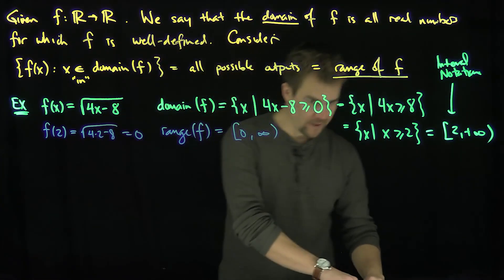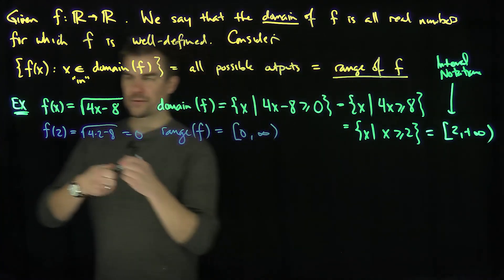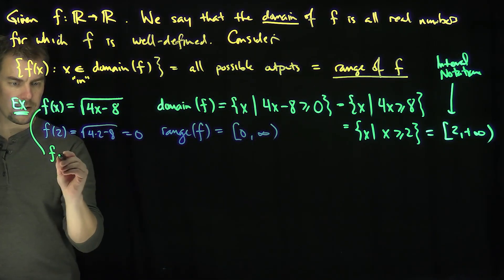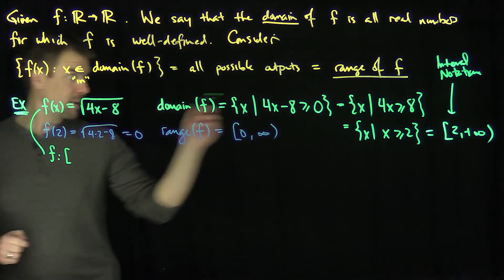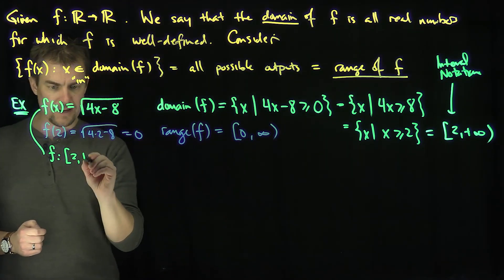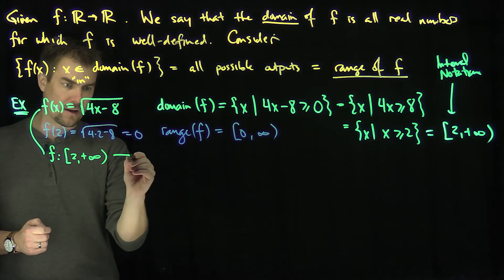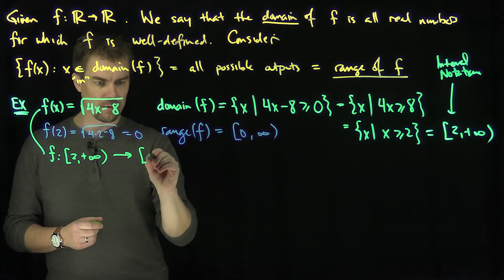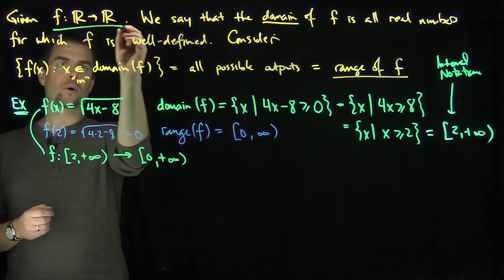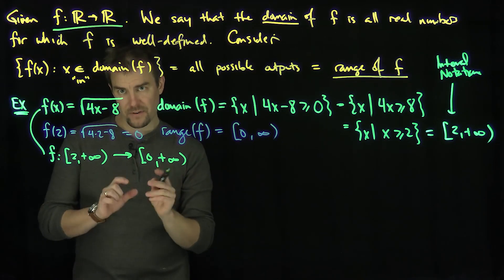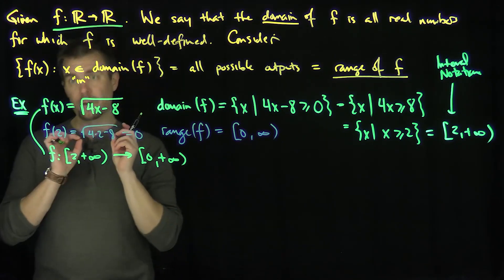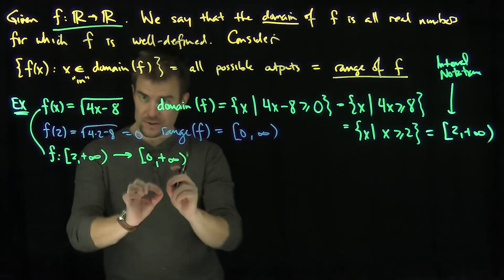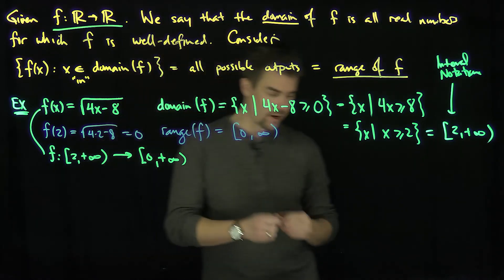So we have the domain and range of this function. So if we were really completely formal about this, we would say for this function, this function f is a map from the closed interval 2 to positive infinity. That's my actual domain into the range, this co-domain, 0 to infinity. So as opposed to writing going from R to R, we can be more specific and more precise about where the function is taking its input values and where it's taking its output values. So that's the domain and range of this function.